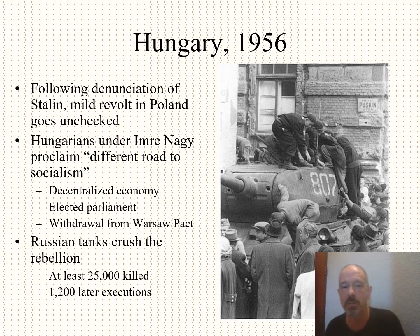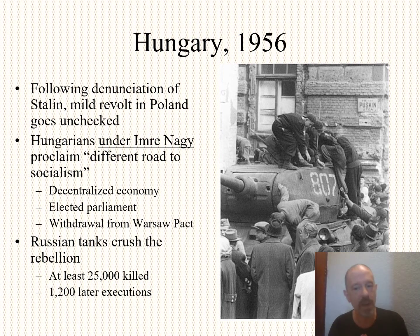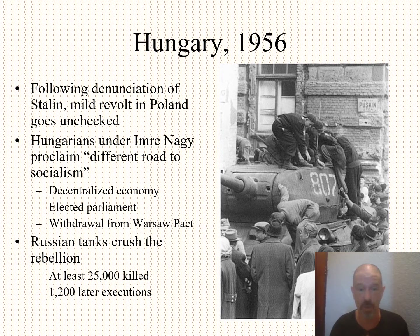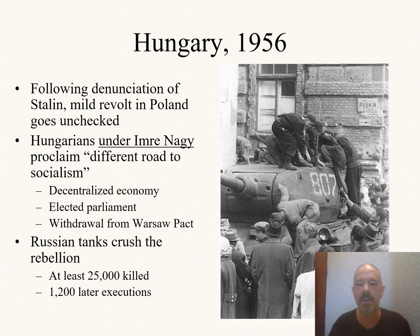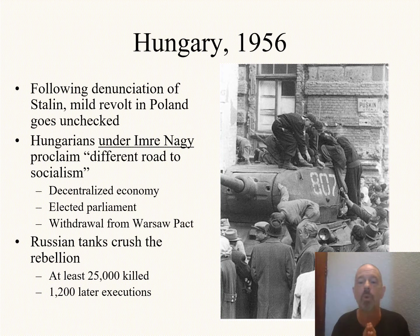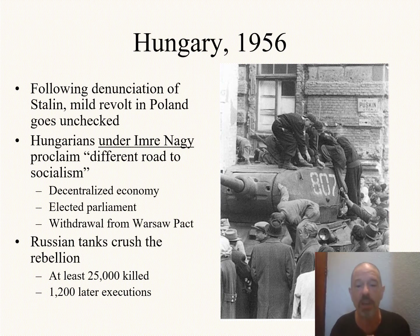This leads to Imre Nagy, the Premier of Hungary, announcing that Hungary is going to remain an ally of the Soviet Union, but make a pretty major break — quote, a different road to socialism, a Hungarian road to socialism. They start decentralizing the economy, opening it up quite a bit. The Soviets don't seem happy but don't respond. They announce citizens will be able to elect a parliament — Soviet Union doesn't respond. Then they announce they will be withdrawing from the Warsaw Pact, basically becoming a Yugoslavia. And this for the Soviets is too much. They send in the military and absolutely crush the rebellion.